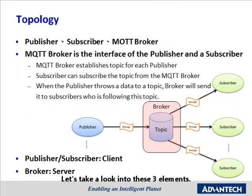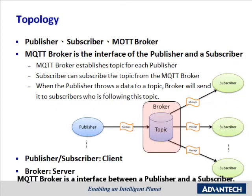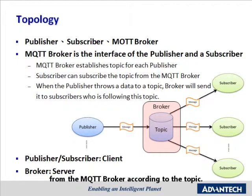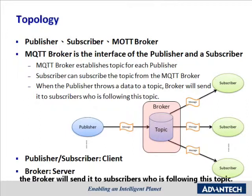Let's take a look into these three elements. The MQTT broker is an interface between a publisher and a subscriber. It establishes a topic for each publisher, and a subscriber can subscribe to data from the MQTT broker according to the topic. When a publisher throws data to a topic, the broker will send it to the subscriber who is following that topic.